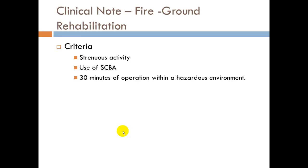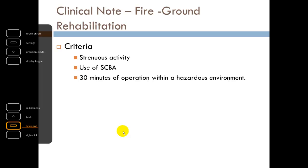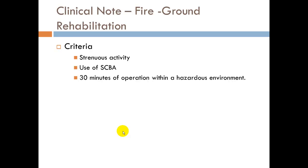Clinical note: fire ground rehabilitation. When fighting fire, this is very strenuous activity. SCBA equipment adds weight and increases caloric burn. 30 minutes of operation in a hazardous environment can significantly increase body temperature. With protective clothing and equipment, we see a lot of fluid loss and sweating. People can get dehydrated, go into heat cramps, heat exhaustion, and heat stroke fairly easily. A rehabilitation plan is always a good idea — getting them fluid replenishment and getting them cooled down out of their bunker gear gives you more resources for the long term.